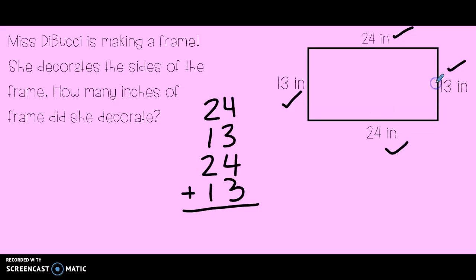We want to know how many inches around the entire frame did Miss Debussy decorate. So I'm going to be adding up all four of the sides. We have 24, 13, 24, and 13. This must be a rectangle since the two opposite sides are matching. Let's start to add. I did the all together method. 4, 5, 6, 7, 8, 9, 10, 11, 12, 13, 14. I made a new ten. 2, 3, 4, 5, 6, 7. Seventy-four. Then I need to look to my drawing for my label. In this problem, it was inches.